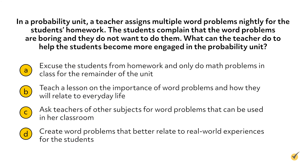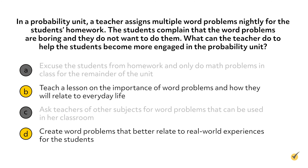Let's look at one more passive versus active problem. In a probability unit, a teacher assigns multiple word problems nightly for the student's homework. The students complain that the word problems are boring, and they do not want to do them. What can the teacher do to help the students become more engaged in the probability unit? In this example, both A and C are passive responses, as they excuse the student from homework or ask other teachers to solve the problem. D is an active solution where the teacher would create new content in order to help her students. This answer is the most productive response.